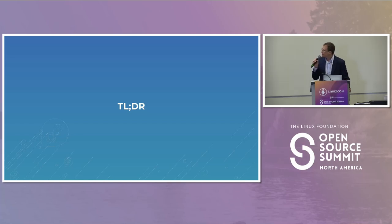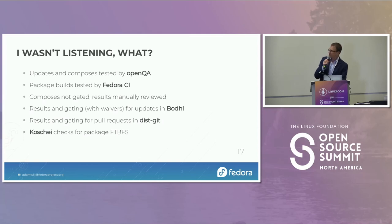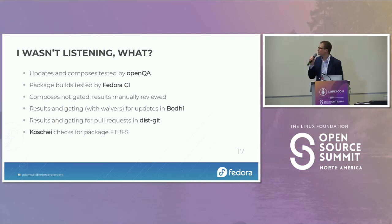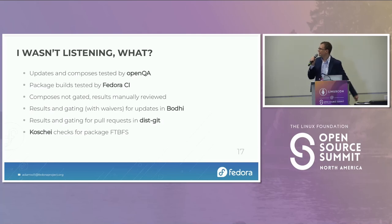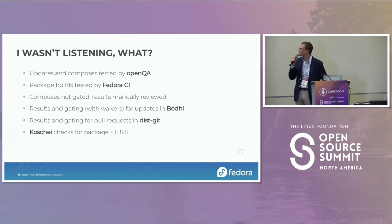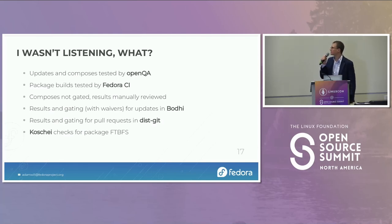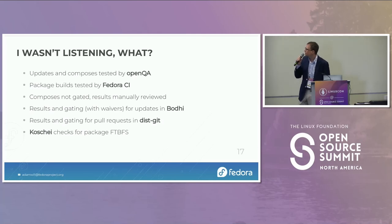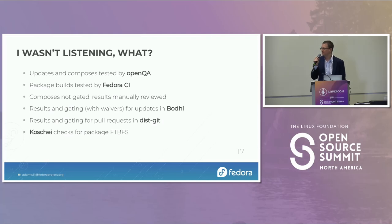Here's the whole talk in one slide — take a picture now. In Fedora: we test updates and composes in OpenQA; we test package builds in Fedora CI; we do not gate composes because we don't really need to; we manually review results; when deciding whether to release, we have a formula for which tests need to pass. Bodhi is where we gate — we collect all automated test results and decide whether the update goes stable. We do pull request tests in Diskit. Cache is another small system that checks whether a package builds from source — that's what FTBFS is.